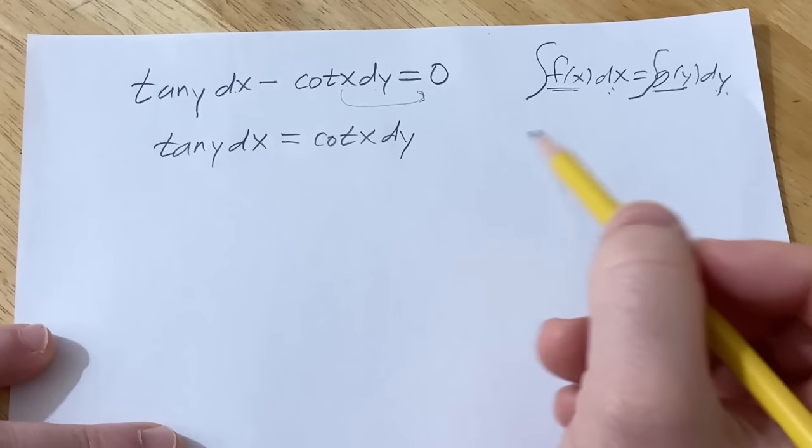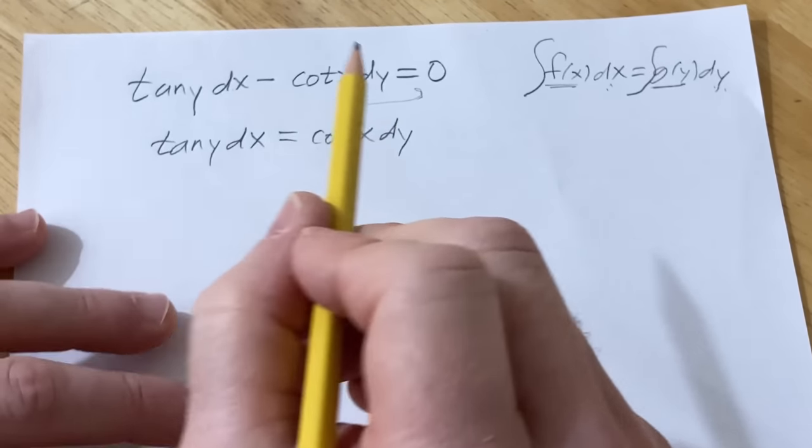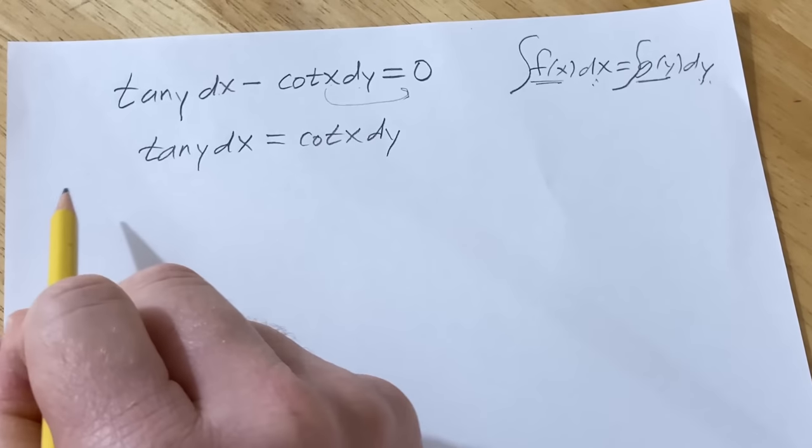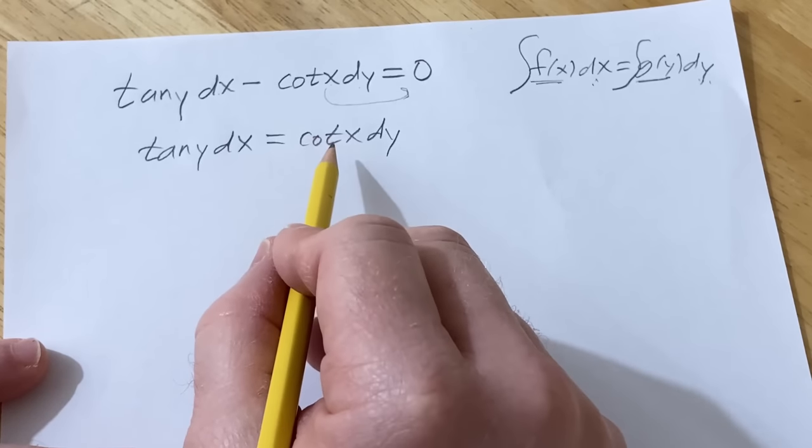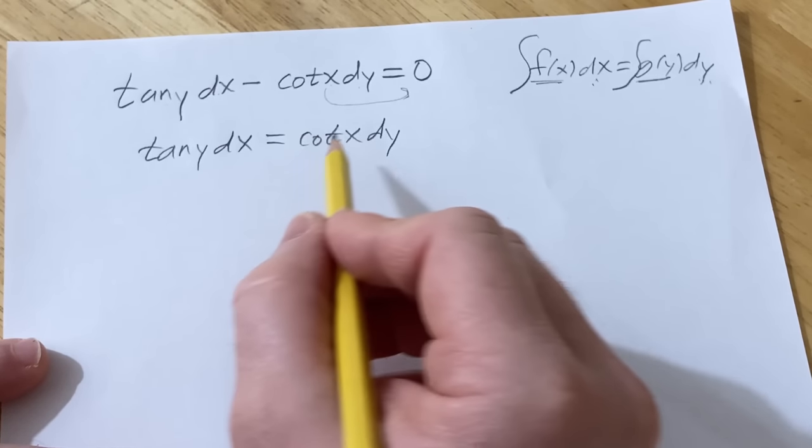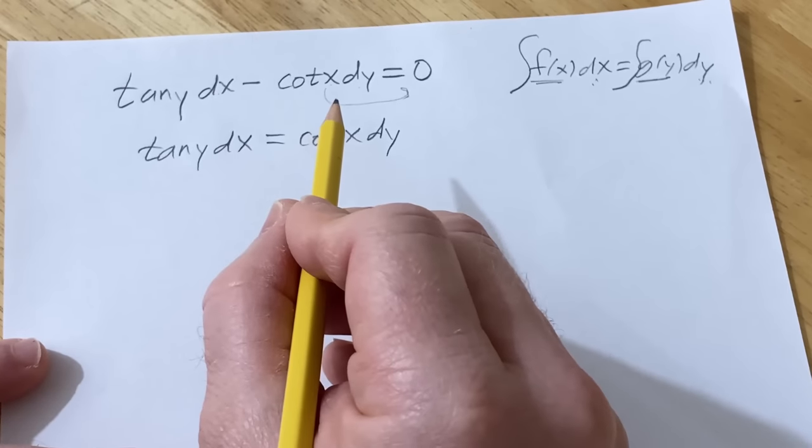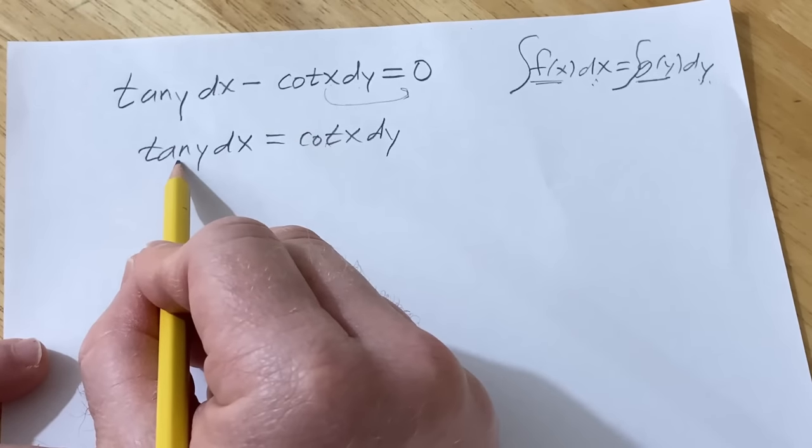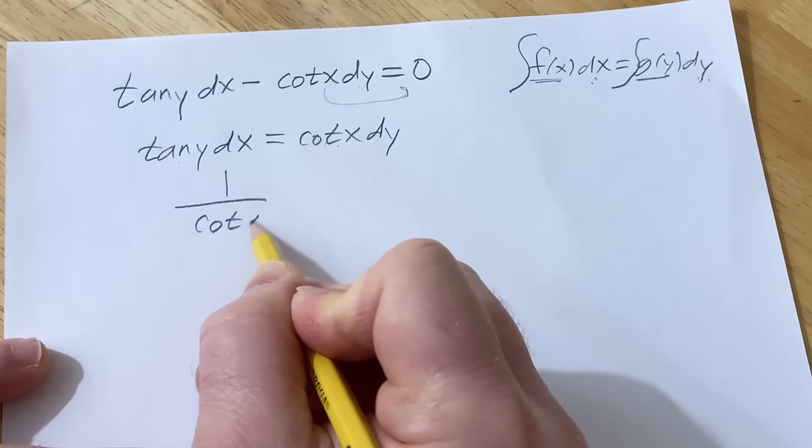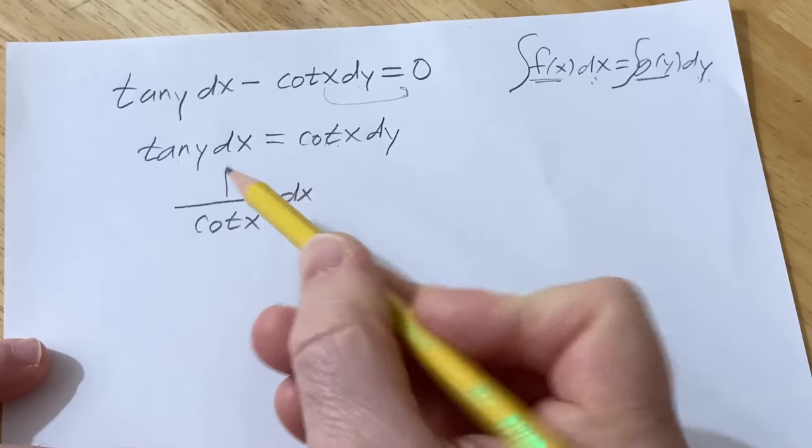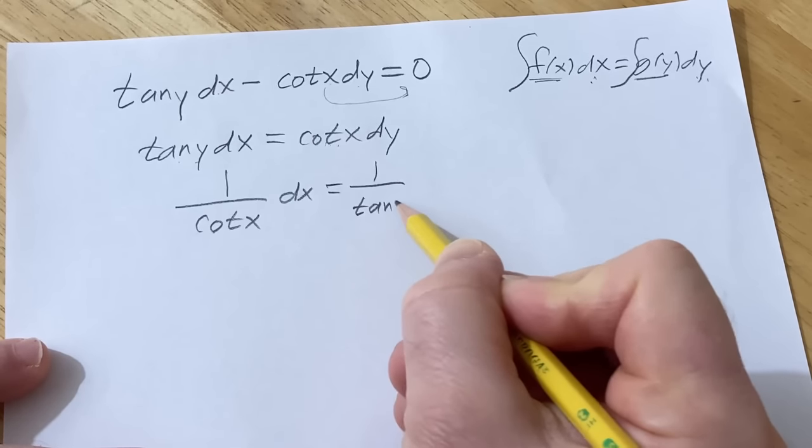So we have tan(y)dx equals cot(x)dy. And this problem is pretty easy relative to some of the other problems. This is actually the very first exercise in the book. So we're still not there. We still need to get all of the x's together with a dx and all of the y's together with a dy. So what I'm going to do is I'm going to divide both sides by cotangent and divide both sides by tangent. This is going to come over here. So we'll get 1 over cot(x) dx. But then we're also dividing by tangent, so this will come over here, 1 over tan(y) dy.